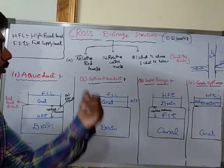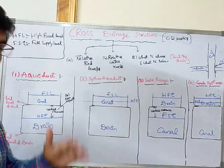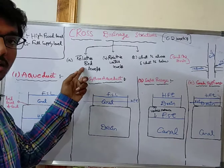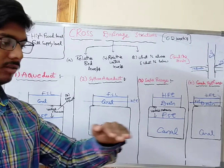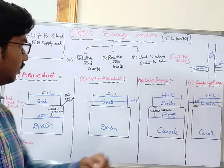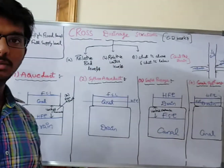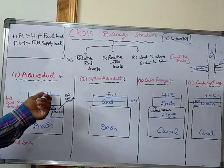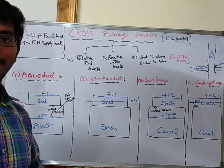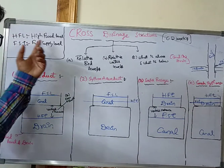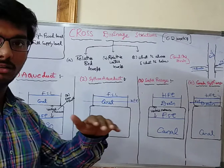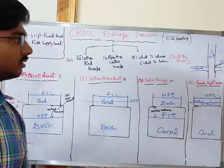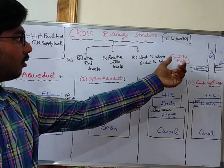How do we differentiate cross-drain structures? First, we look at the relative bed levels — the bed level of the canal and the bed level of the drain. Second, we consider the relative water levels: the water level in the canal, which is the Full Supply Level (FSL), and the water level in the drain, which is the High Flood Level (HFL).